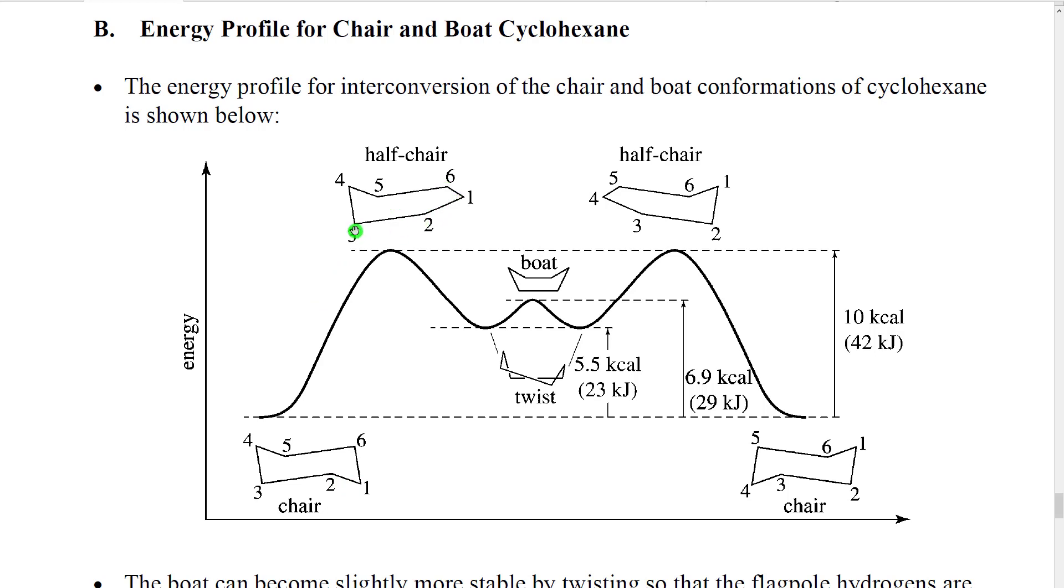That would have a maximum amount of eclipsing. That would give it a maximum amount of potential energy. And we call that the half chair because half is folded up and half is flat.